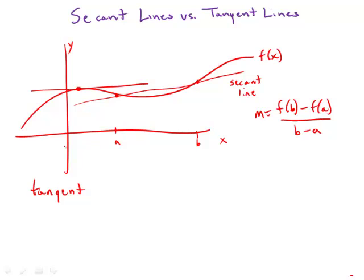And that's a much harder problem, to find the slope of a tangent line, because notice that we don't have a change in y or a change in x. We only have one point, so both change in y and change in x would be zero, which is not very helpful.